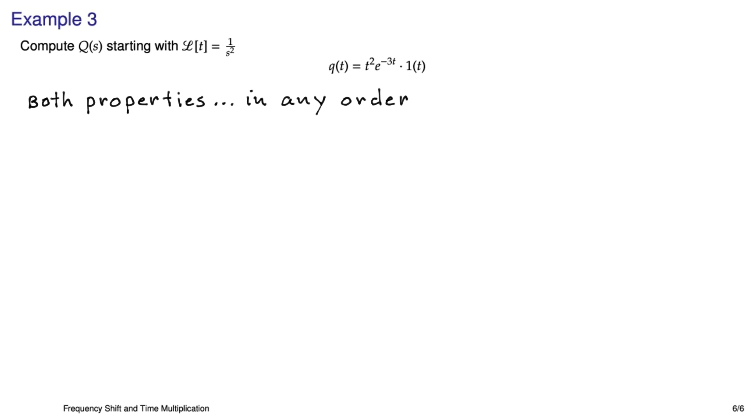So we're going to have to use both properties. Now you can do those properties in any order you want, but it would be best if we did multiplication by time first. Because as we saw in the previous example, it can get a little bit nasty when you're taking the derivative with respect to s. So we'll get that out of the way and then do the frequency shift. So the Laplace transform of t² is just -d/ds of the Laplace transform of t, and we know what that is. So it's -d/ds of 1/s².